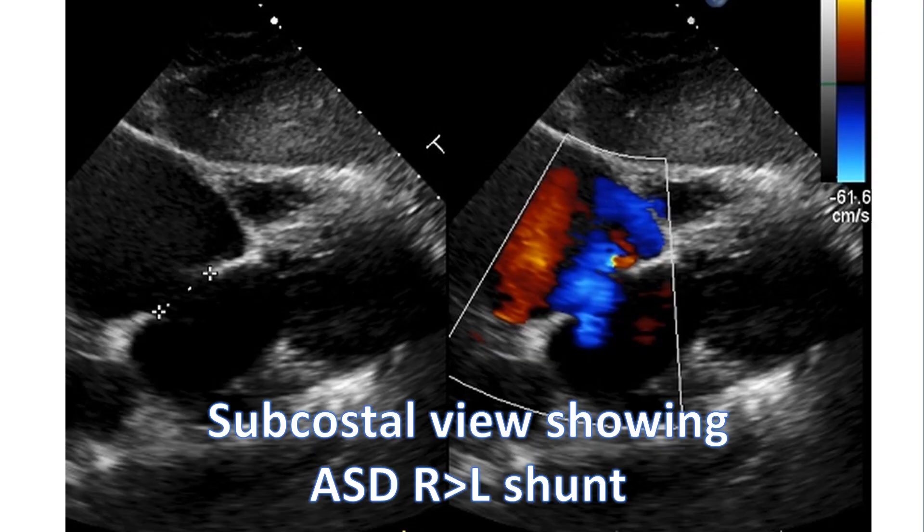Due to the need for identification of viscero-atrial situs, echocardiography in children usually starts with the subcostal view, unlike the parasternal long axis view used in adults.